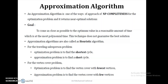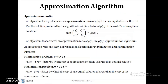This third approach is known as an approximation algorithm, where we try to find an optimal solution for an optimization problem but settle for a near-optimal solution. This algorithm runs in polynomial time. The goal is to come as close as possible to the optimal value in a reasonable amount of time. This approximation algorithm is also called a heuristic algorithm. For the traveling salesman problem we can take the short sighting instead of a shorter cycle, and for the vertex cover problem we can take few vertices instead of the fewest vertices.